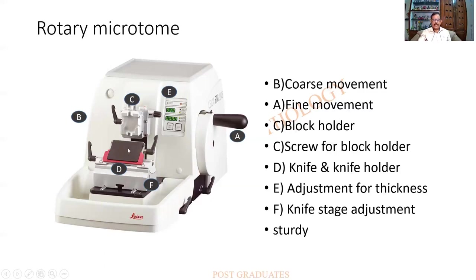The knife with the knife holder has screws to tighten it and fix it at a particular angle; it has a separate holder which moves like a sledge. There is a knife stage as well. E is the adjustment for thickness — for example, if you want five microns for sections or ten microns for trimming, it is set here. Once all settings are done, the instrument operates semi-automatically.